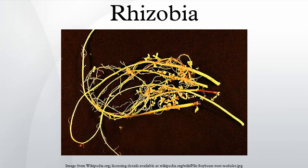Infection threads grow to the nodule, infect its central tissue and release the Rhizobia in these cells, where they differentiate morphologically into bacteroids and fix nitrogen from the atmospheric elemental N2 into a plant-usable form, ammonium, using the enzyme nitrogenase. The reaction for all nitrogen-fixing bacteria requires this process. In return, the plant supplies the bacteria with carbohydrates and proteins, and sufficient oxygen so as not to interfere with the fixation process.